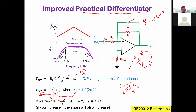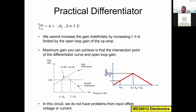The gain value is directly proportional to the component values. Increasing R_f increases the output; increasing the input frequency also increases the output; increasing the capacitor value also increases the output. However, we cannot increase the gain indefinitely — it is limited by the open-loop gain of the operational amplifier.